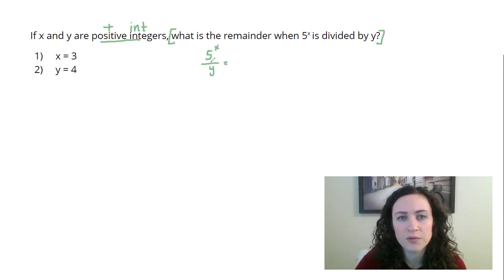So I know that I have 5 to the x divided by y. What is the remainder? When you divide something like this, 5 to the x, you're going to have your quotient and then potentially some remainder left over, and this is what we really care about. This is the portion that I really care about. At this point, we don't have a lot of additional information here, so we can move on to the statements.